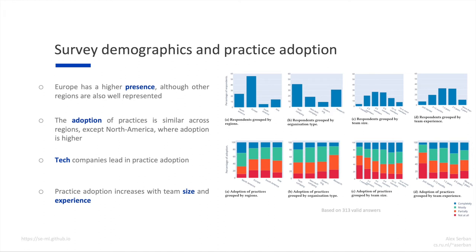The bottom plots show the adoption of practices based on the criteria defined earlier. We observed that the adoption of practices grouped by regions is similar across regions, except for North America where adoption is higher. This shows that although Europe is overrepresented, it introduces little bias in the data. We observed that tech companies lead in practice adoption, followed by non-tech companies and governmental organizations. Lastly, we observed that practice adoption increases with team size and with team experience, since more team members can drive practice adoption and more experienced team members are aware of more practices. Overall, the demographic information shows that the questionnaire questions were clear and did not introduce any significant bias.